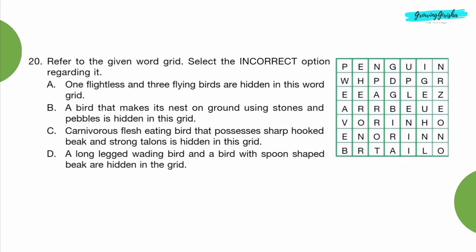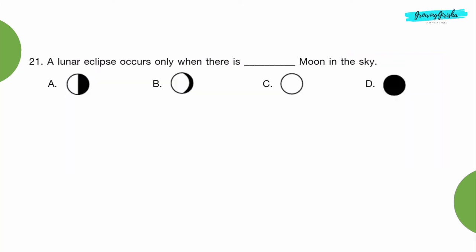Question 20: Refer to the given word grid. Select the incorrect option regarding it. Option D: A long legged wading bird and a bird with spoon shaped beak are hidden in the grid. Question 21: A lunar eclipse occurs only when there is dash moon in the sky. Option C.